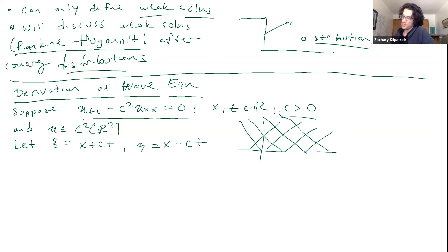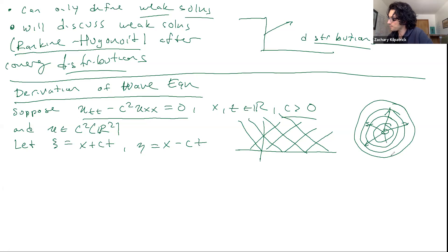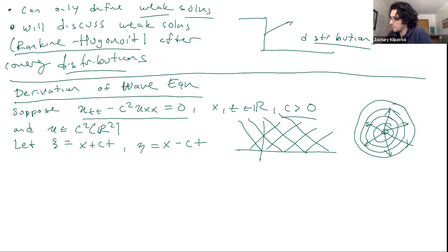We're talking about the wave equation, so I want you to think of dropping a pebble into water. What happens? You get these radiating annular waves emanating from the point at which you drop the pebble. This is the idea with the wave equation — you have propagation in all directions from a source. The sound of an explosion, for example, will propagate outward through the air in all directions, not with a preferred direction as in the linear transport equation.